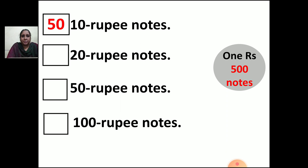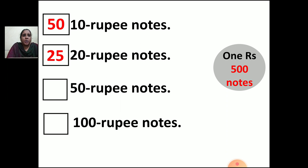Now, 20 rupee notes. How many 20 rupee notes should you have to make 500 rupees? You can see in the table of 20 when you get 500. What will be your answer? 25. So 25 twenty-rupee notes will make 500 rupees.